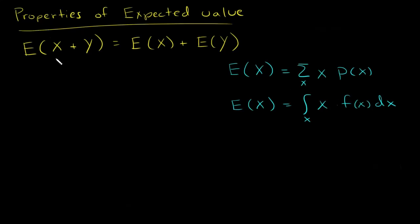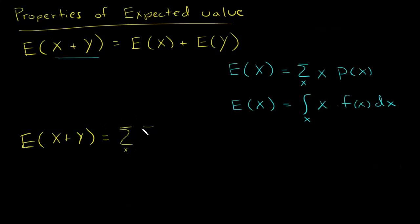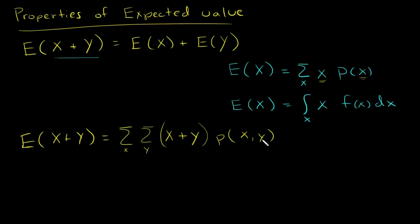Or if x is continuous, then we would integrate over all possible x values, and we would have x times the probability density function of x. So depending on whether x is discrete or continuous, it looks like this. Now I have x plus y, so I'm going to plug in x plus y. Suppose x and y are both discrete for right now. Then I would be summing over x and summing over y, and I would have x plus y times the joint probability mass function of x and y.